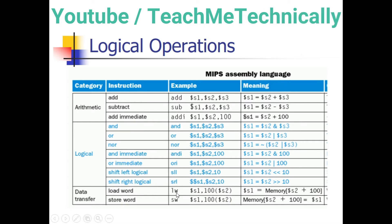The syntax for Load Word: it goes to memory, fetches a value, and saves that value in a register. The first register used in the Load Word command is the rt register, and the second register is the rs register. For example, 'lw s1, 100(s2)' means: add 100 to the value stored in register s2, go to that memory location, fetch the value stored there, and place it in register s1.